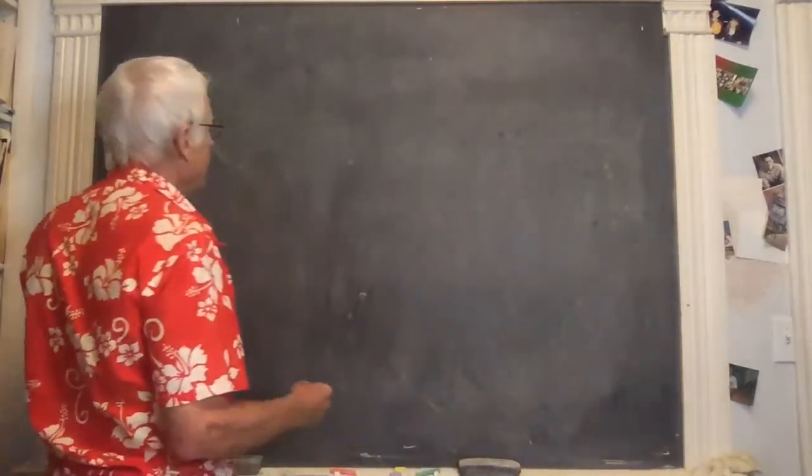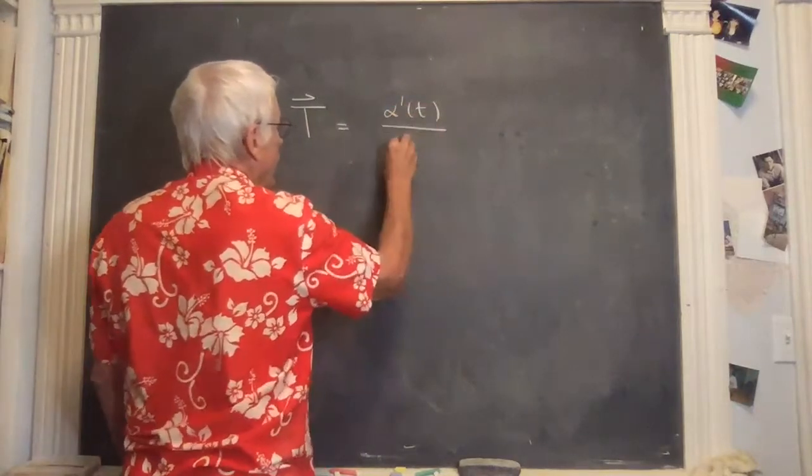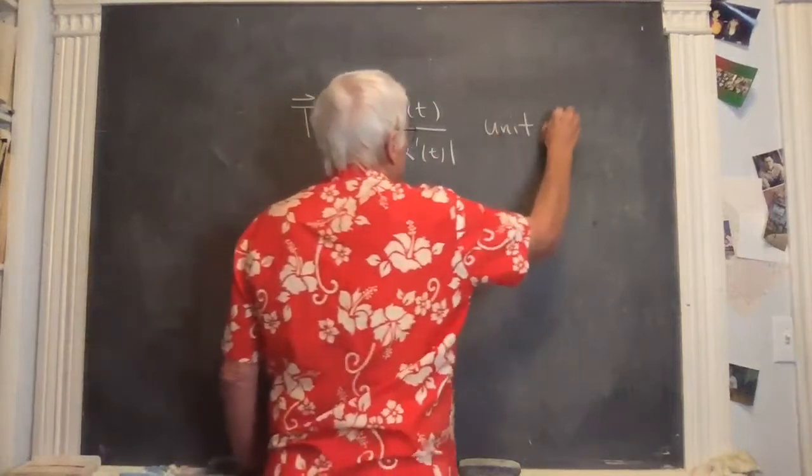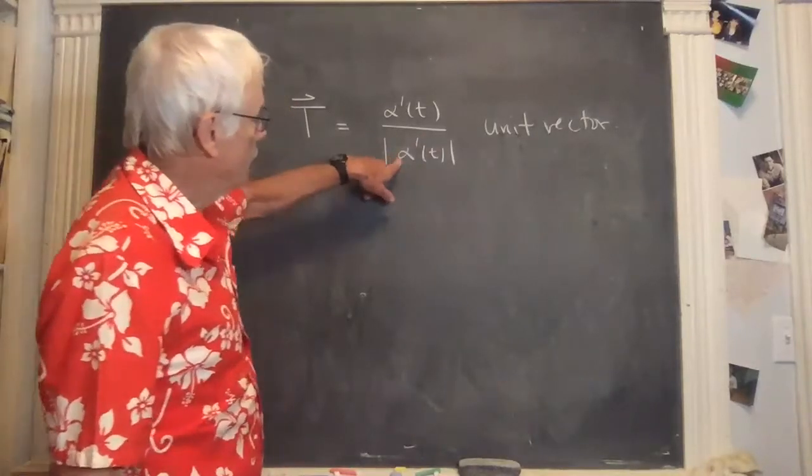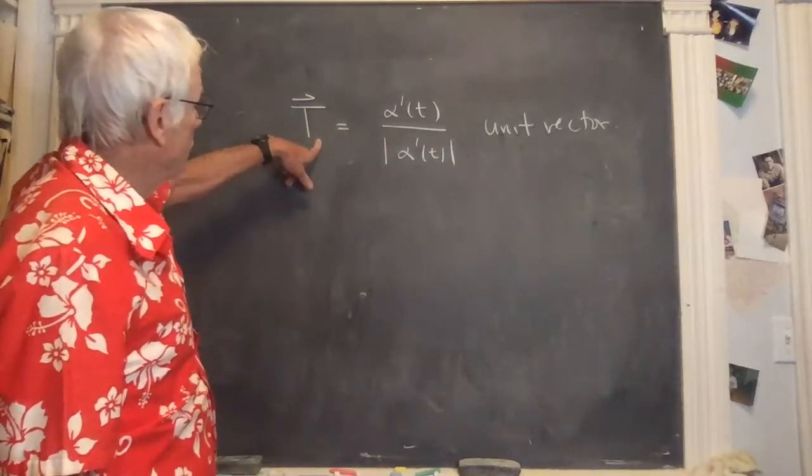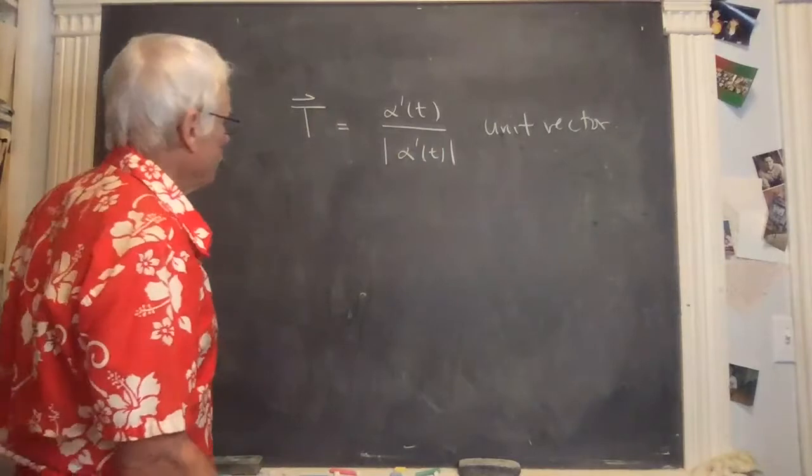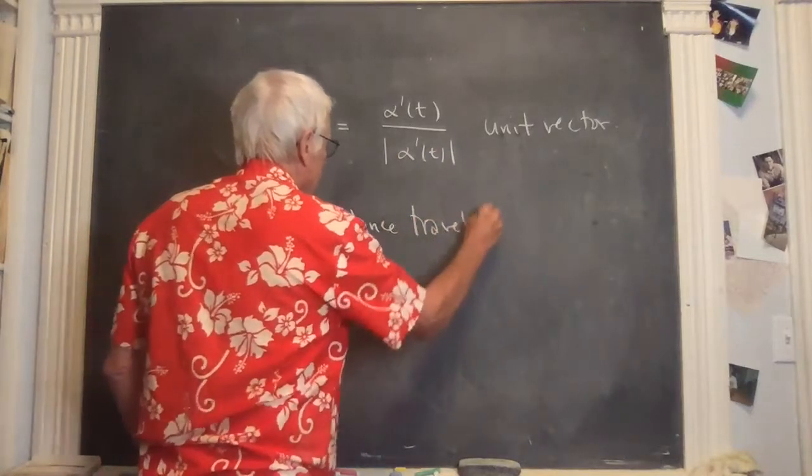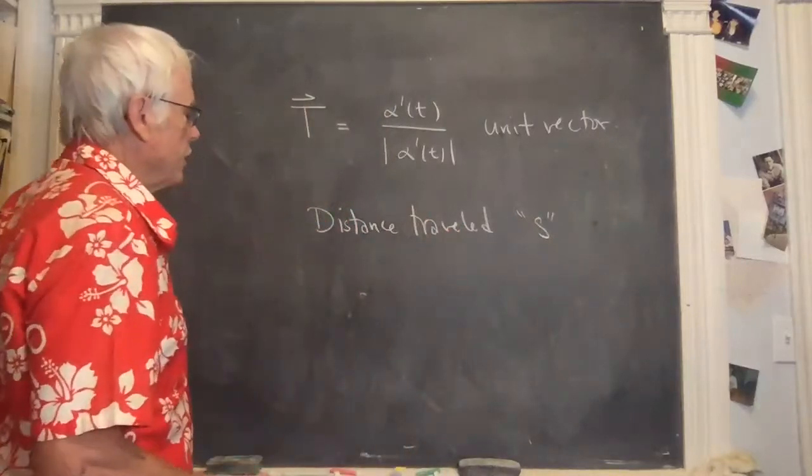So this is the distance traveled by alpha, is the integral of the speed. There's one more thing I wanted to show you. And so we've talked about the vector T, which is α'(t) divided by the length of α'(t), unit vector. And in general, this is usually a little lowercase s indicates distance.